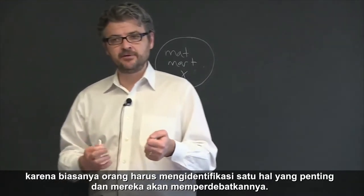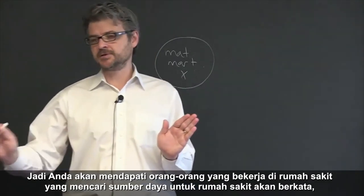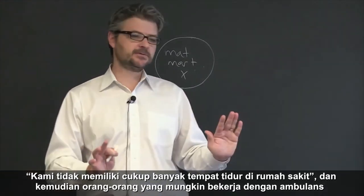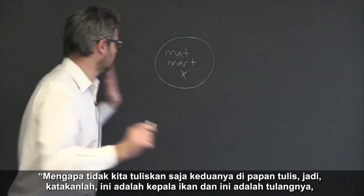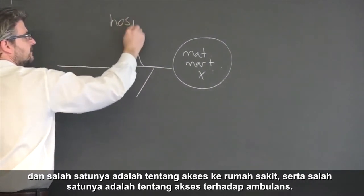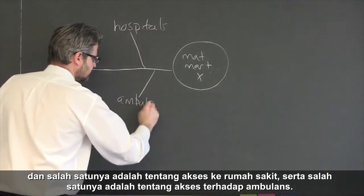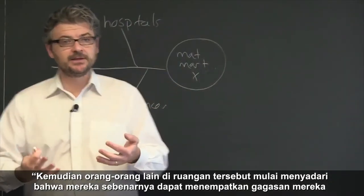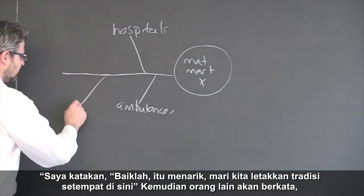Usually people have to identify the one thing that matters and they fight about it. People working in hospitals will say we don't have enough beds; people working with ambulances will say we don't have enough ambulances — and you end up fighting. I say, why don't we just put both of those on the board? So this is the head of the fish, these are the bones — one is about access to hospitals, one is about access to ambulances. Then other people realize they can put their ideas up too, saying things like local traditions that don't allow women to go to hospitals. Let's put local traditions here.